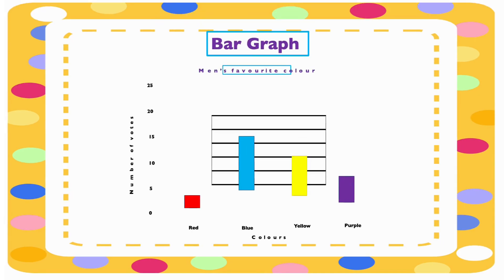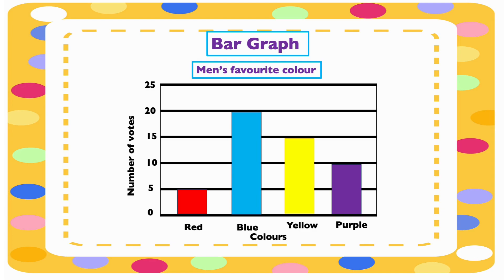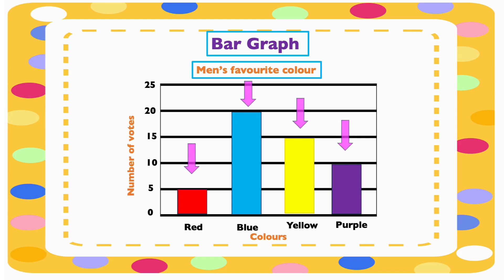This is a bar graph. A bar graph displays data using bars of different heights. This bar graph shows men's favorite color. At the left side, the numbers represent the number of votes. At the bottom are the colors. Each bar has a different color — we have red, blue, yellow, and purple. The top of the bars shows the number of votes for each bar.